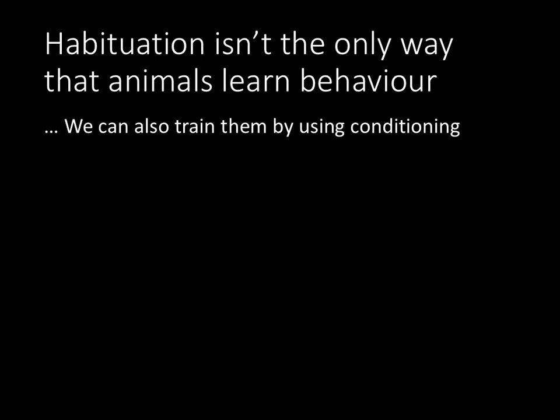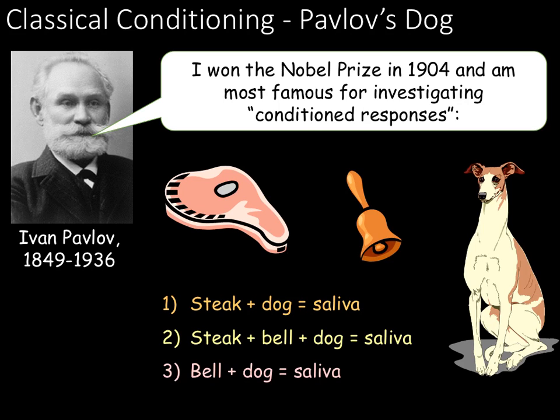Habituation is a way of training — of the animal learning what to do. However, we can also train animals using two types of conditioning. The first type is classical conditioning, which is most known for the work by Ivan Pavlov who looked at dogs. Classical conditioning happens when an animal learns passively to associate a neutral stimulus with an important one.